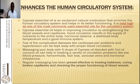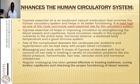Complicated diseases like cardiovascular problems and hypertension can be kept away with proper blood circulation. Massaging your body with six drops of cypress oil blended with five mils of coconut oil can help in treating a variety of circulatory problems like low blood pressure, hemorrhoids, hair loss, varicose veins, and hormonal imbalances. Regular massaging has been proven effective in treating baldness, curing broken capillaries, and checking the proper functioning of the blood vessels.